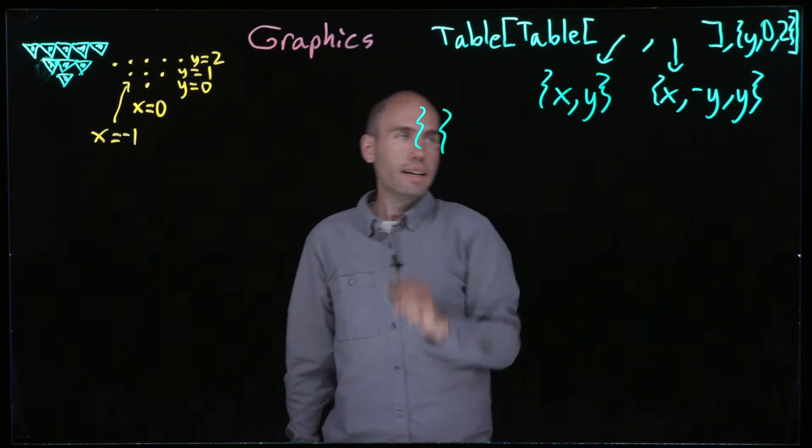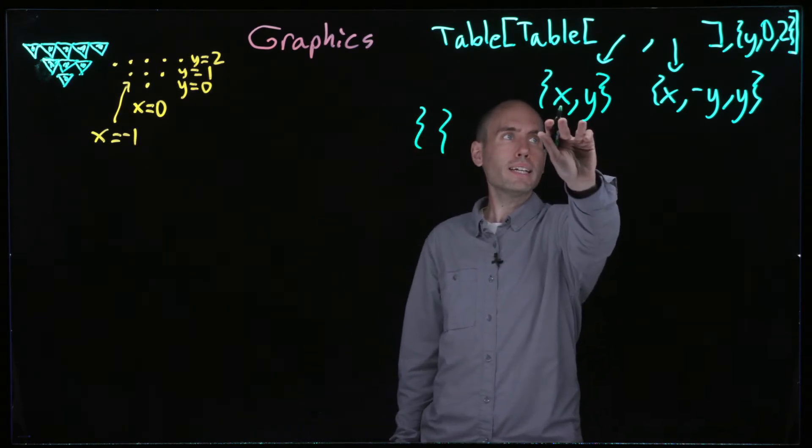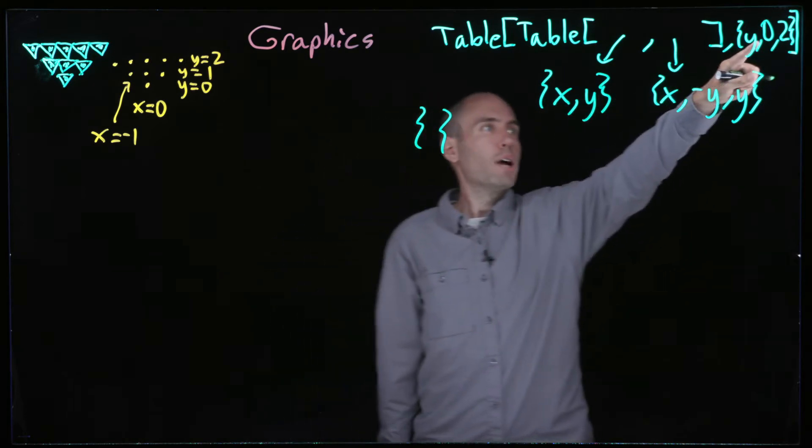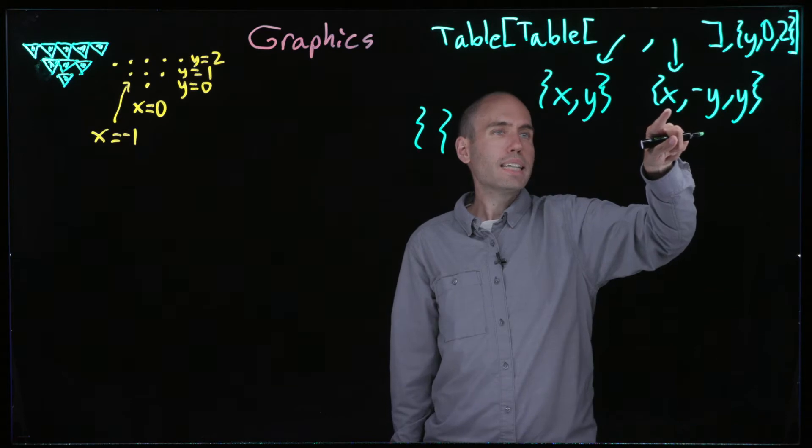I'm going to get a list of lists, and each of those lists is going to have a point in it. So really it's a list of lists of lists, but that's okay. We start with y equals zero, x equals zero.